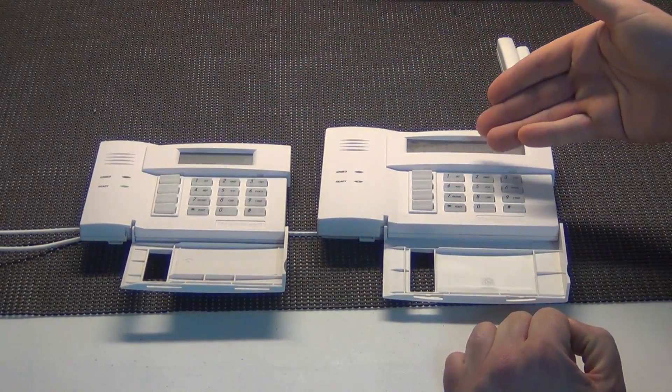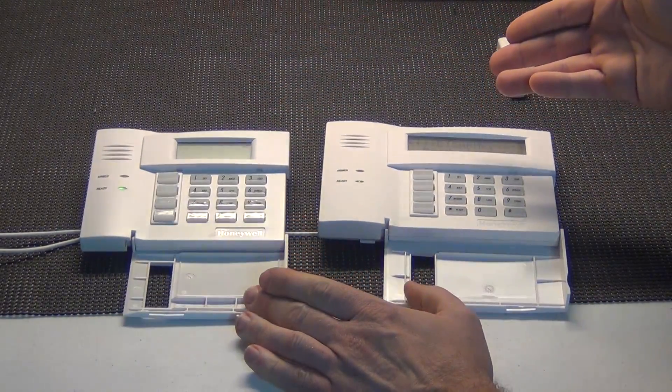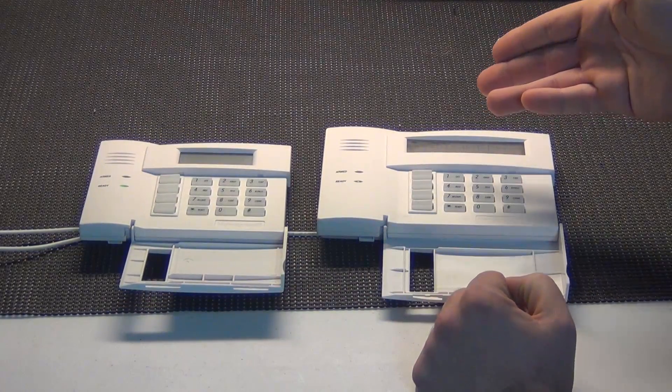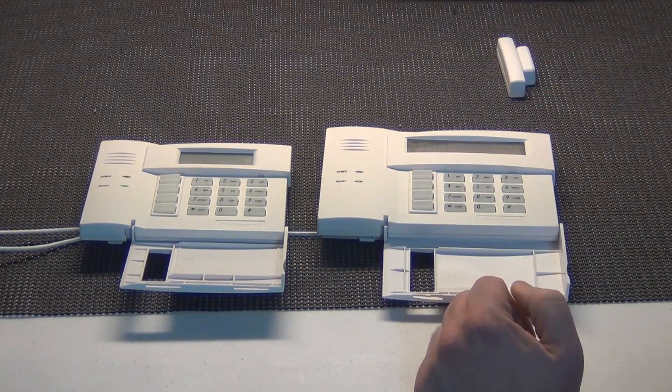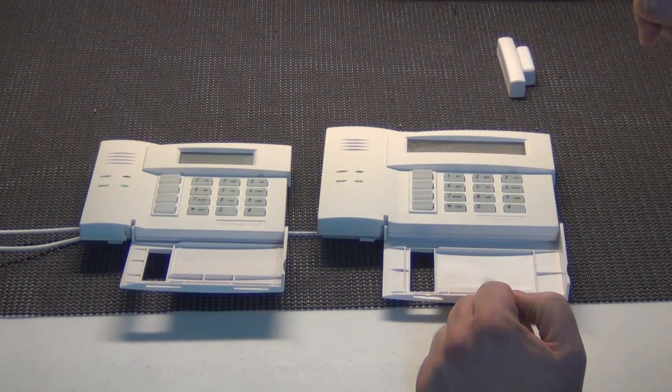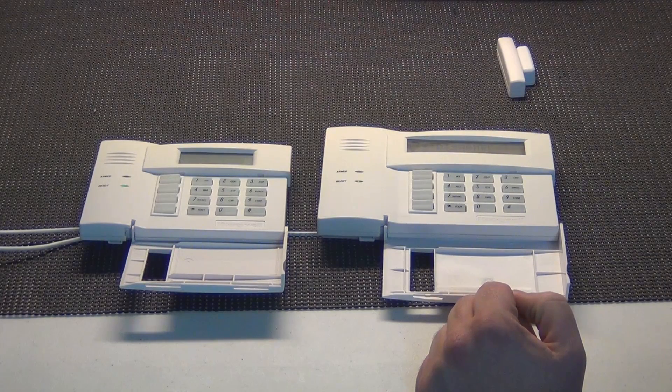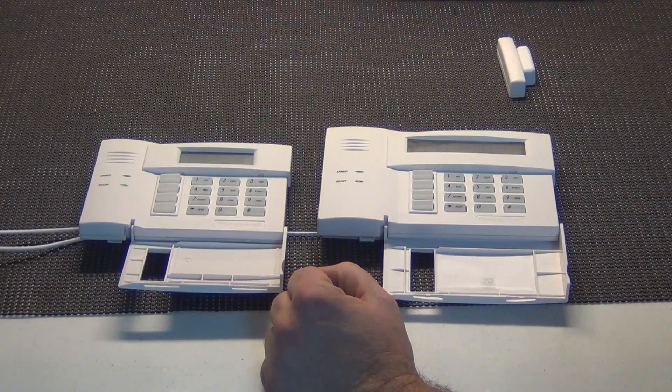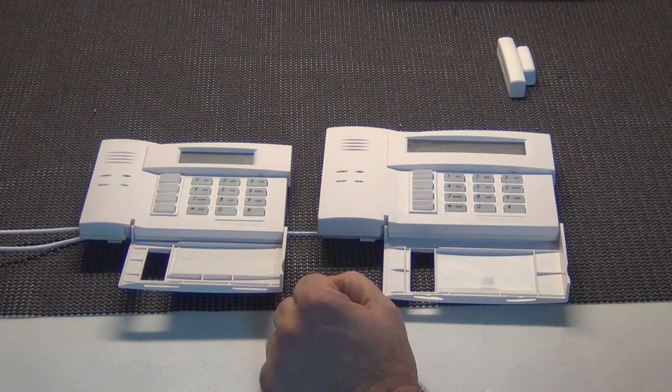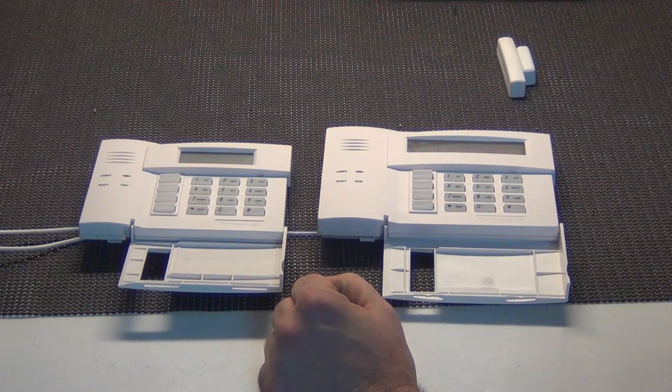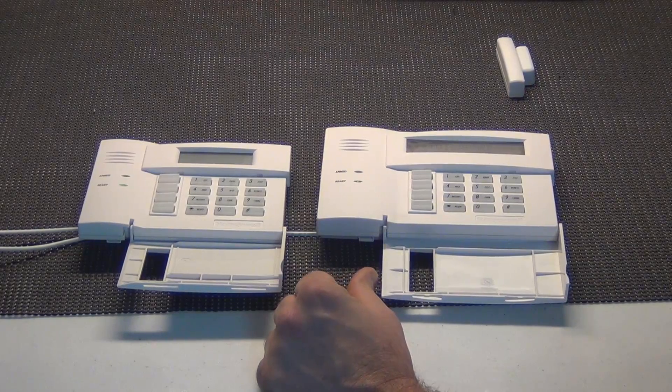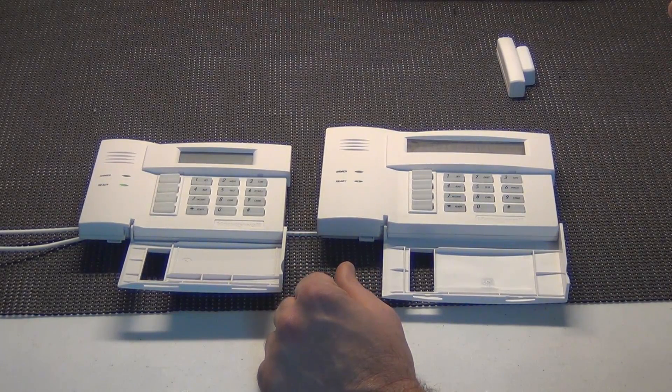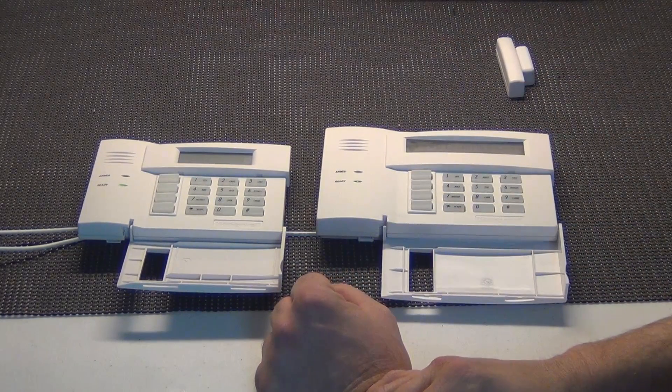The 6160, the size difference, as you can see here plainly, 6160 is five and sixteenths high by seven and three eighths wide by one and three sixteenths deep. And then your 6150, it will be four and seven eighths inch high by six and a quarter wide by one inch deep. So the 6150 is also a little smaller than the 6160.